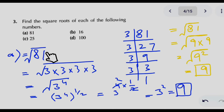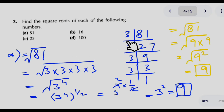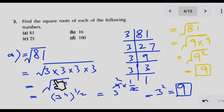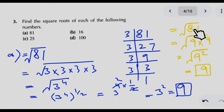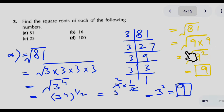In question number 3, we find the square root of various numbers. In part A, we find the square root of 81. We factorize 81 as 3 × 3 × 3 × 3, which is 3 to the power 4. Then we multiply the power 4 by the square root index 1/2 to get 3 squared, which equals 9. Alternatively, since 81 is a perfect square of 9, we can write it as 9 squared under the square root, and the square cancels with the square root to give 9.